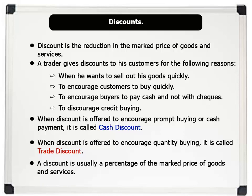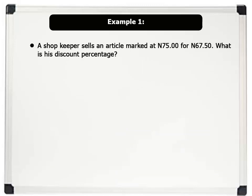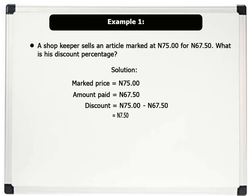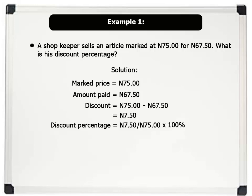Let us now solve some problems. Example 1: A shopkeeper sells an article marked at 75 Naira for 67 Naira 50 Kobo. What is his discount percentage? Solution: Marked price is 75 Naira. Amount paid is 67 Naira 50 Kobo. So his discount is 75 Naira minus 67 Naira 50 Kobo, which equals 7 Naira 50 Kobo. His discount percentage will now be 7 Naira 50 Kobo, which is the discount, divided by 75 Naira, which is the marked price, times 100%. Which equals 10%. That's brilliant.